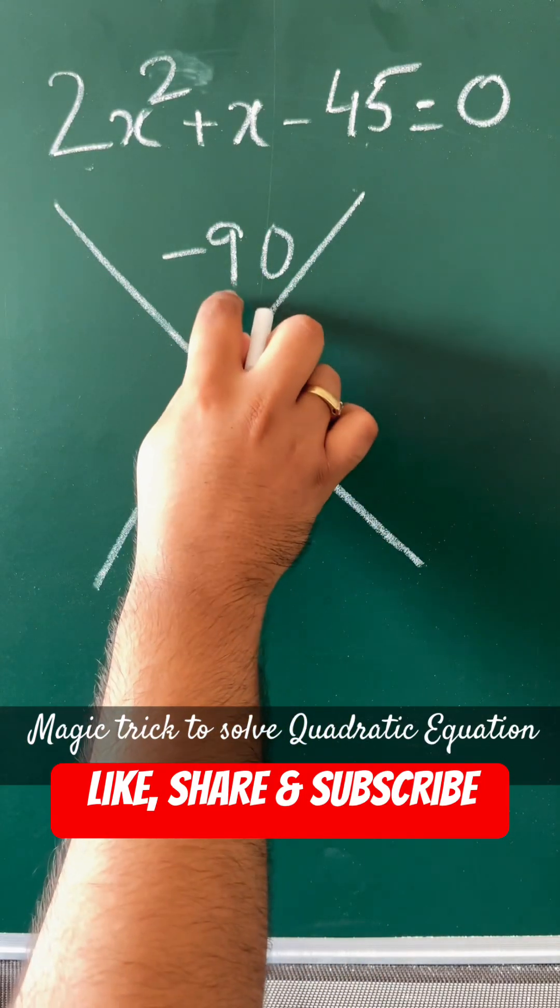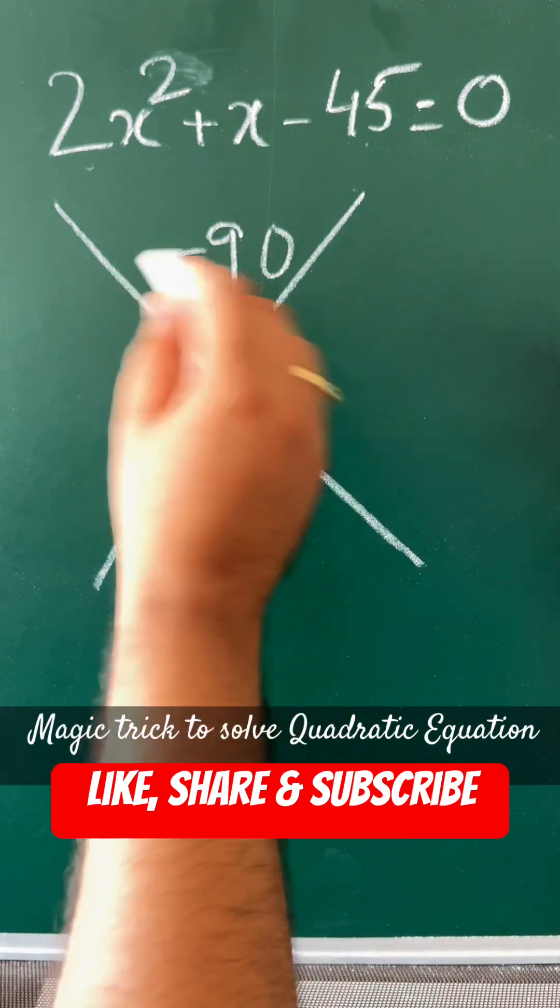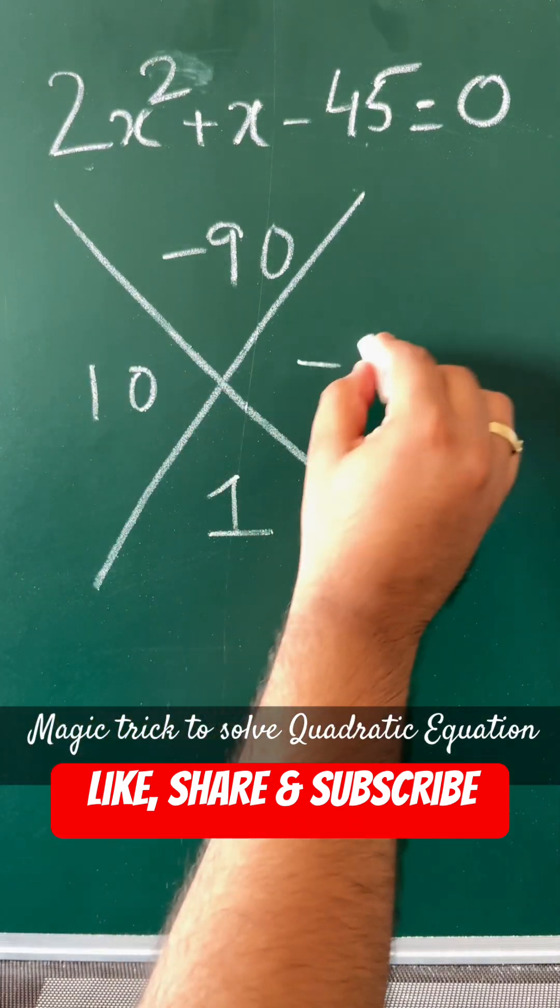Think of two numbers which are factors of 90. When multiplied, they give you -90, and their sum is 1. I can think of 10 and -9.